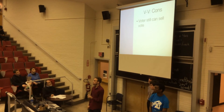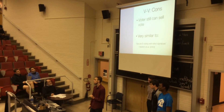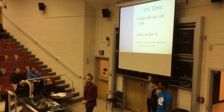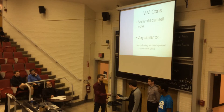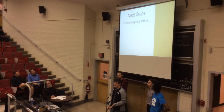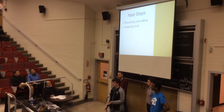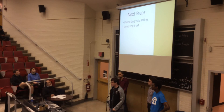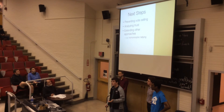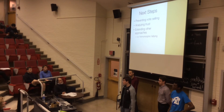Some cons are that the voter can still sell his vote, even though it's harder. We also noticed this scheme is very similar to a system published by Ibrahim et al. in 2003, which shows the difficulty of creating novel crypto systems. For future work, we'd really like to find a cryptographic way to prevent vote selling as opposed to a legal way. We'd like to analyze the trust a voter has to place in each of the different third parties and minimize that as much as possible. Finally, we'd like to look at extending other approaches, like homomorphic tallying, layering our system with that to get some of the good properties of both systems.